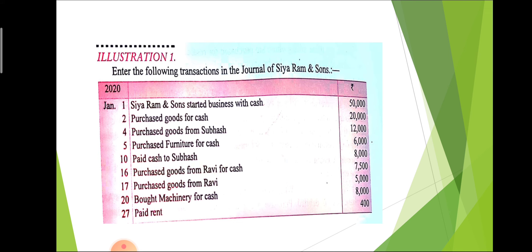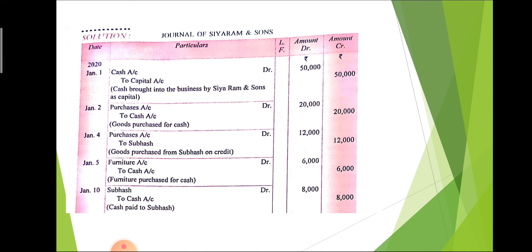Next: purchase furniture for cash. We only use the purchase or sale word with goods, not with other assets. So for furniture, since furniture comes into the business it is debited, and cash goes from the business so it is credited. The journal entry is: furniture account debit to cash account.